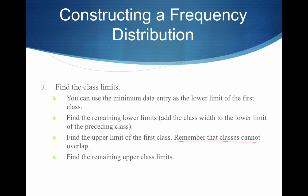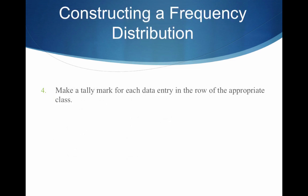This will all make sense once we get into an example. Step 4: make a tally mark for each data entry in the row of the appropriate class — just go through your data and figure out which class or interval each entry belongs in. Finally, count your tally marks to find the total frequency for each class.